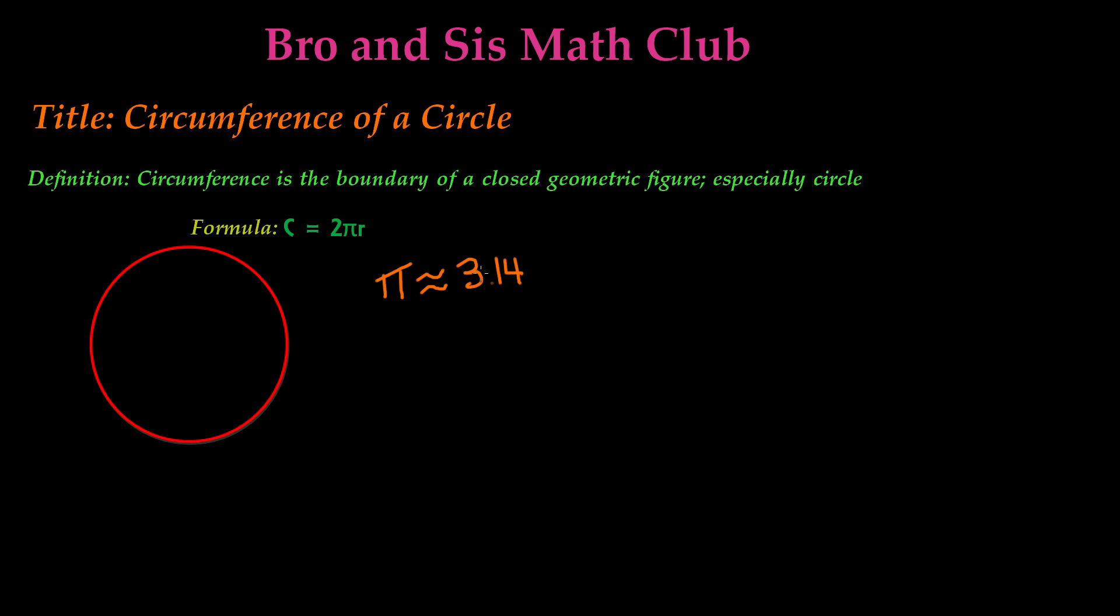So we have to multiply 2 times 3.14 times r. So r stands for radius, and the radius is half of the diameter.